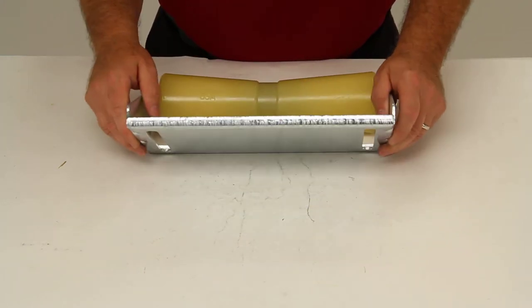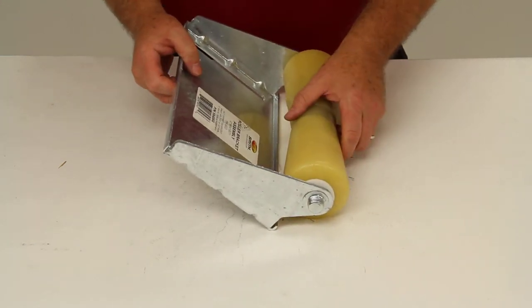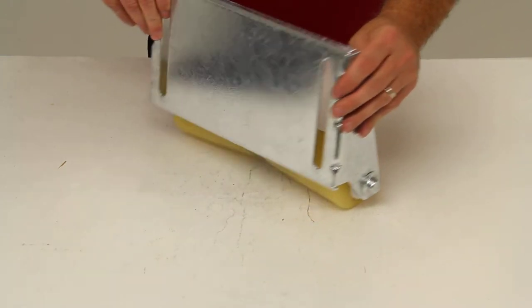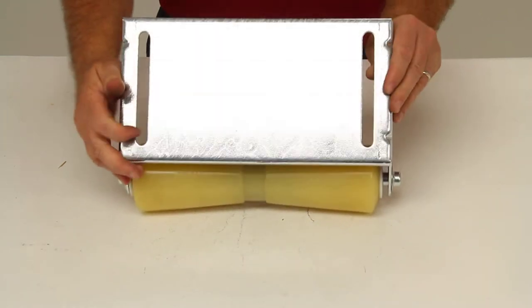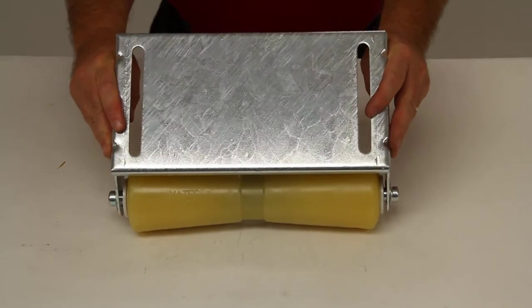This panel bracket lets you bolt your roller assembly onto the front of your boat trailer. It has slotted mounting holes, right here. It will let you adjust the position during installation.